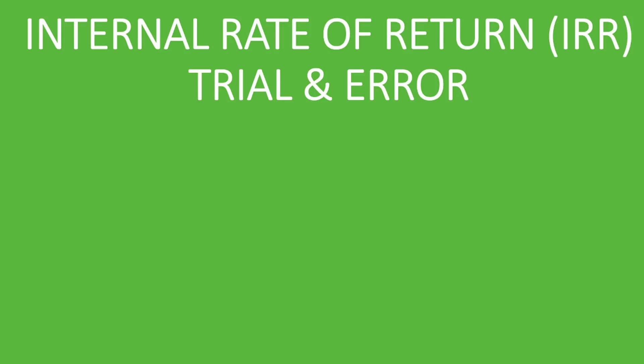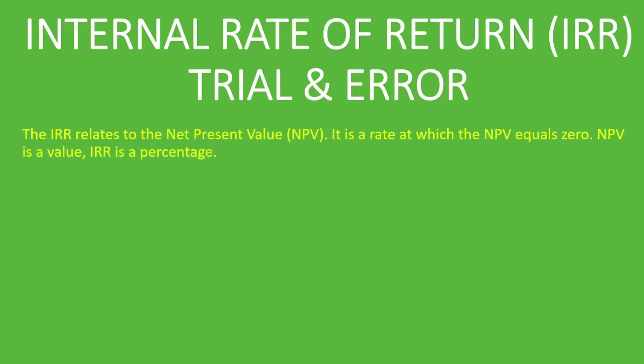But how do you do it using trial and error? First, what is the internal rate of return? The IRR relates to the net present value, or NPV. It is the rate at which the NPV equals zero. To avoid confusion: NPV is a value — like a dollar amount — and IRR is a percentage. So the IRR is the percentage you use to discount cash flows that will make the NPV zero.